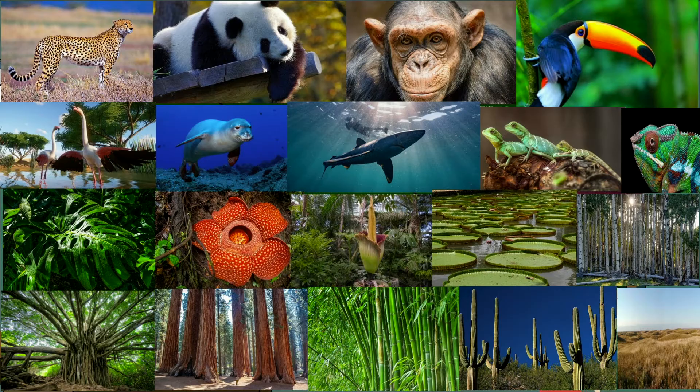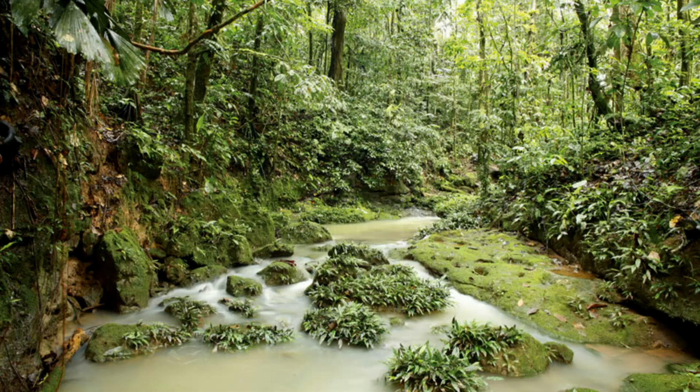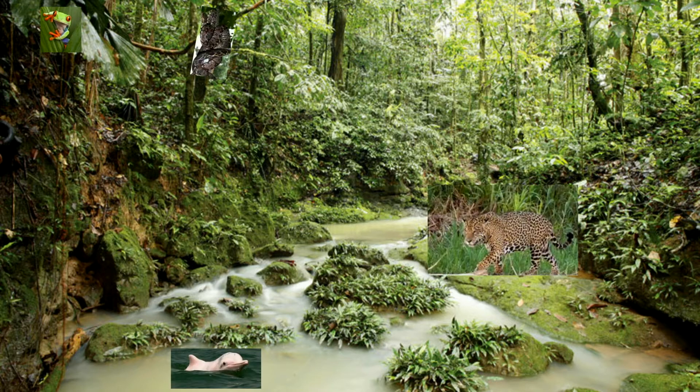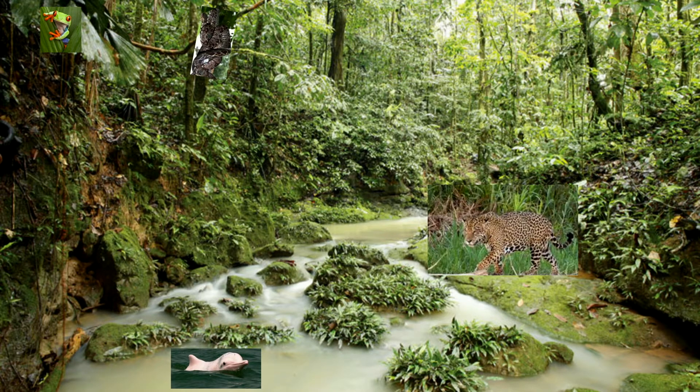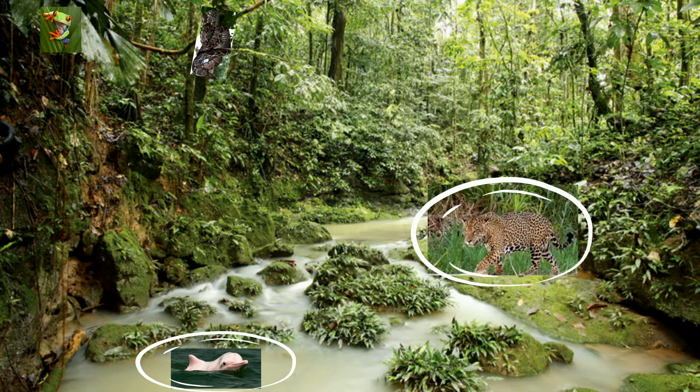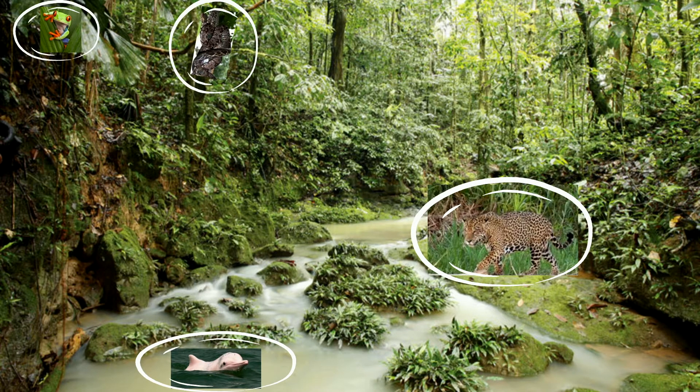So, let's go back to the rainforest for a second. Can you name some of the animals you see? Pause and try to figure it out. Alright, welcome back. I spot a pink river dolphin, a jaguar, a red-eyed frog, and a boa.